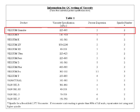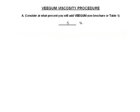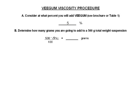Looking at the information page, for Vigam the percent dispersion is 5% and the spindle number is 2. So we enter 5 as the percent in our calculation. With this information, we need to calculate how many grams of Vigam will be needed in a 500 gram total weight suspension. This slide shows the equation for doing this. Performing the math results in a figure of 25 grams.